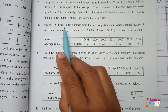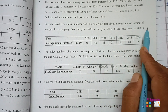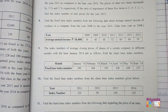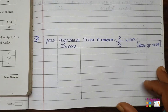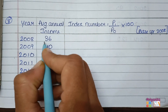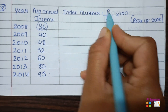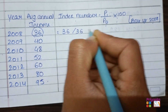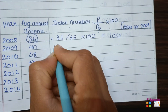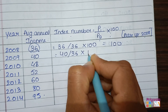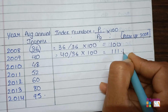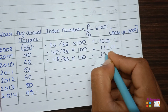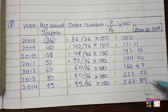Moving to question number 8: Find the fixed base index number from the following data about the average annual income of workers in a company from 2008 to 2014. Take the base year as 2008. The base year value is 36, so the index number formula is: current year P1 divided by base year, multiplied by 100. For 2008: 36 divided by 36 into 100 equals 100. For the next year: 40 divided by 36 multiplied by 100 gives 111. We'll continue with the remaining information.